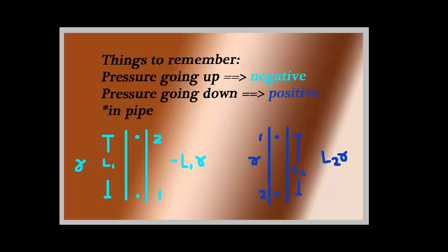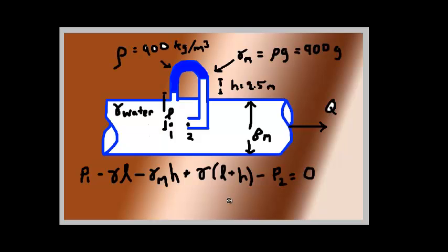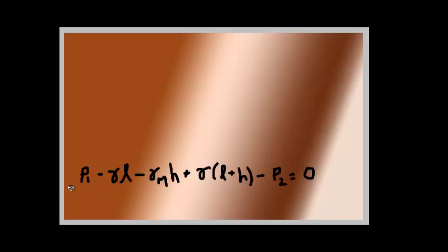So using that formula that we had over here, we will attempt to solve this. Because horizontal Z1 is Z2, we will remove those and we get something like this. P1 minus γL minus γM*H plus γ times (L+H) minus P2 is 0, which gives us, if we cross out this because they cancel out, P2 minus P1 equals γ minus γM times H.